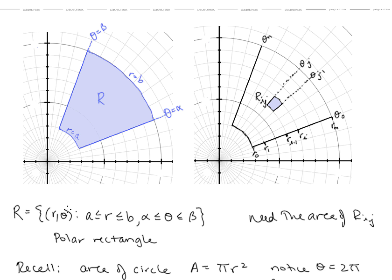Let's look at the region described by the set of points (r, theta) such that r is between a and b, and theta is between alpha and beta. In polar coordinates, we're starting at the circle of radius a and going to the circle of radius b, but only the part between the ray theta equals alpha and the ray theta equals beta. This is what we call a polar rectangle — it has constant bounds on both r and theta.